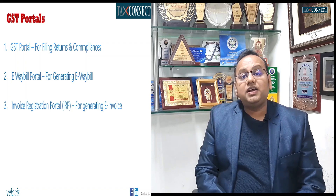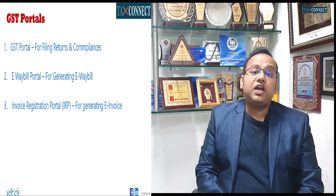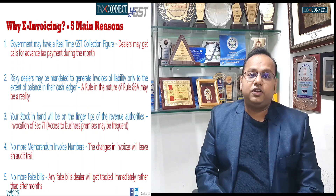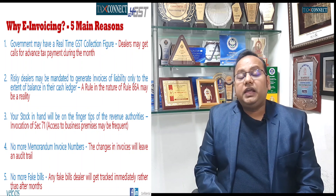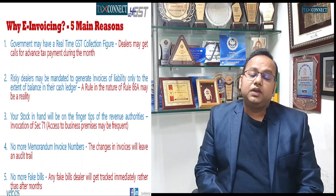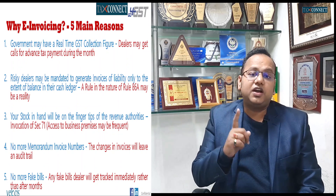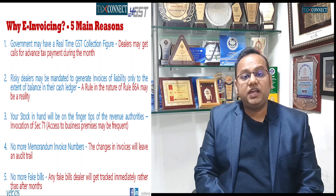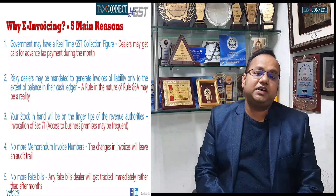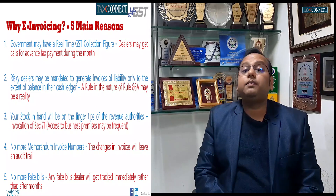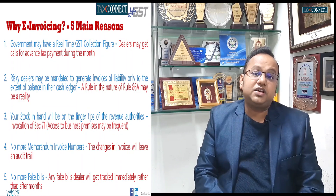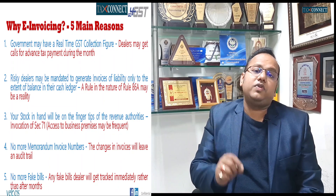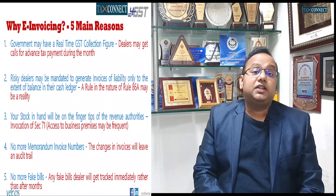Let us understand what are the reasons for e-invoices and how we have to prepare vis-à-vis the expectations of revenue. First, in the e-invoices era, the commissioner rate would have the GST liability figure of each and every assessee on a daily basis, because the moment an assessee generates an e-invoice, his ANX-1 and liability gets updated on a real-time basis. The counterparty when he generates his e-invoice — that is, when your vendor generates his e-invoice — your ANX-2 will get updated, and hence on a daily basis the commissioner rate would have the liability figure of every assessee. Also, since the HSN codes inward and outward would be available with the commissioner rates on a real-time basis, the stock in hand business-area-wise would also be available with the commissioner rates.